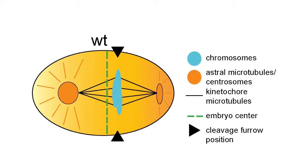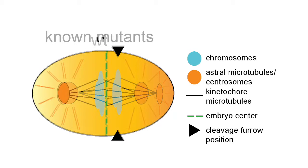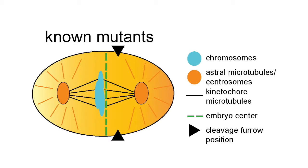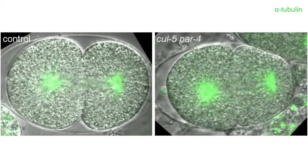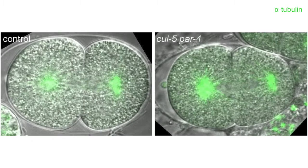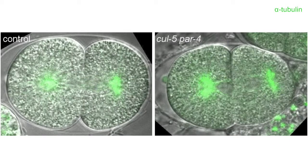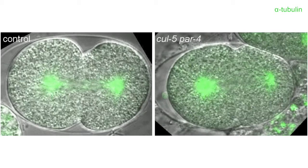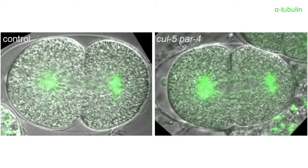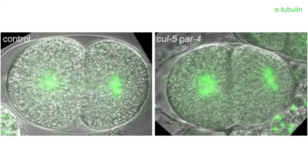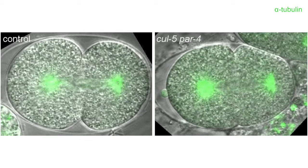So far in all the known mutants that had defects in furrow position the defect was due to a defect in spindle position, but what we very surprisingly found is that in CUL5 par4 embryos the mitotic spindle was localized properly towards the posterior of the embryo. So what we had basically was an uncoupling between the position of the spindle and of the furrow, which to our knowledge had never been described before.